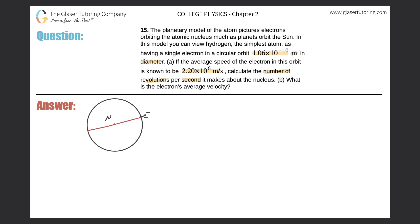We have a diameter here, and the diameter d is equal to 1.06 times 10 to the negative 10 meters. Now it says if the average speed of the electron in this orbit is 2.2 times 10 to the sixth meters per second — meaning it's moving at a speed, not a velocity, but a speed of 2.20 times 10 to the sixth meters per second — it wants us to calculate the number of revolutions per second it goes about the nucleus.